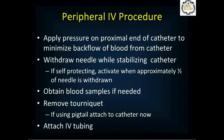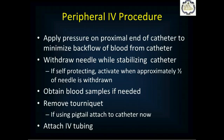Never put the needle back into the catheter once removed — if it catches on the catheter and cuts it, part of the catheter can break off and float through the veins into the patient's lungs. This is called catheter shear. If drawing blood samples, do so at this point, then remove the tourniquet. Attach your pigtail catheter now if using one, or attach your IV tubing directly to the IV catheter.